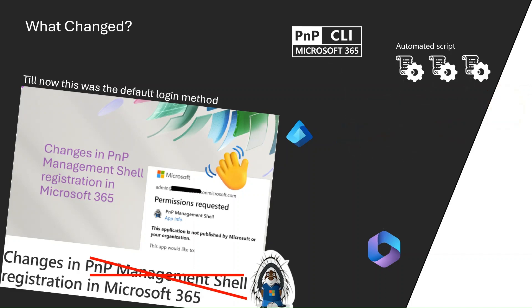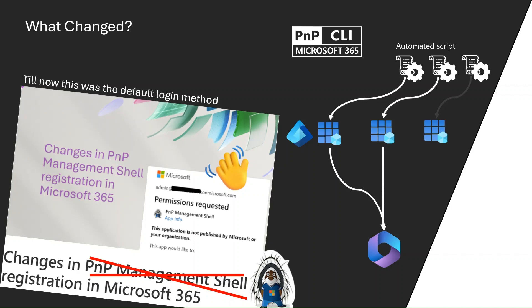In order to encourage you toward a more secure posture, we'd like to introduce you to a setup we kind of promoted before, but now it's going to be the default. So now you're going to create your own app registration that you will be the owner of — a single-tenant app registration with only the scopes that are needed for your specific case. Of course, it can have all the scopes the PNP management shell had before, but for automated scripts it should have only the scopes required to run things for that specific script.